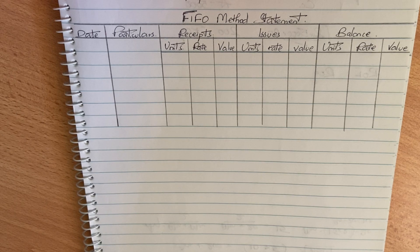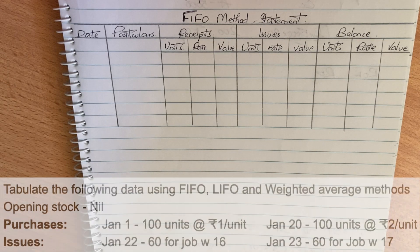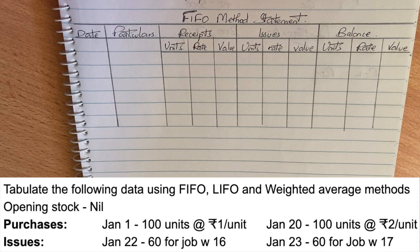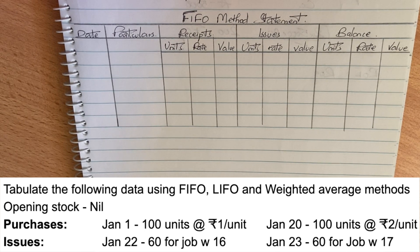We have the first-in-first-out method, last-in-first-out method, and weighted-average method. The problem has opening stock as nil. Purchases are on the 1st and issues are on the 1st. The issues are mainly why we have the different methods to calculate. If we adopt the closing stock valuation and cost of material valuation, the change will have an impact on this problem.